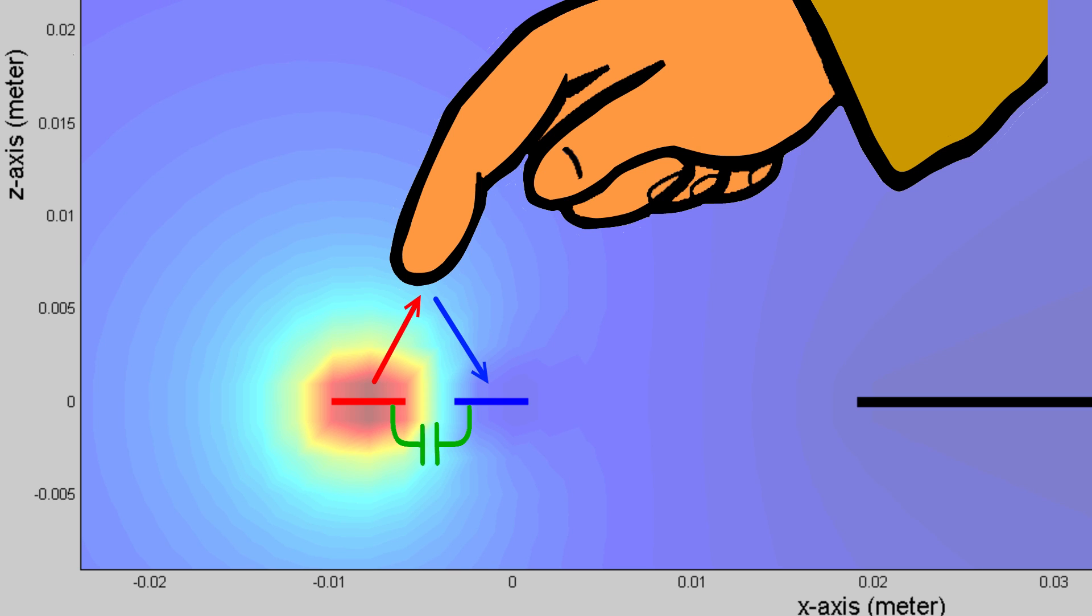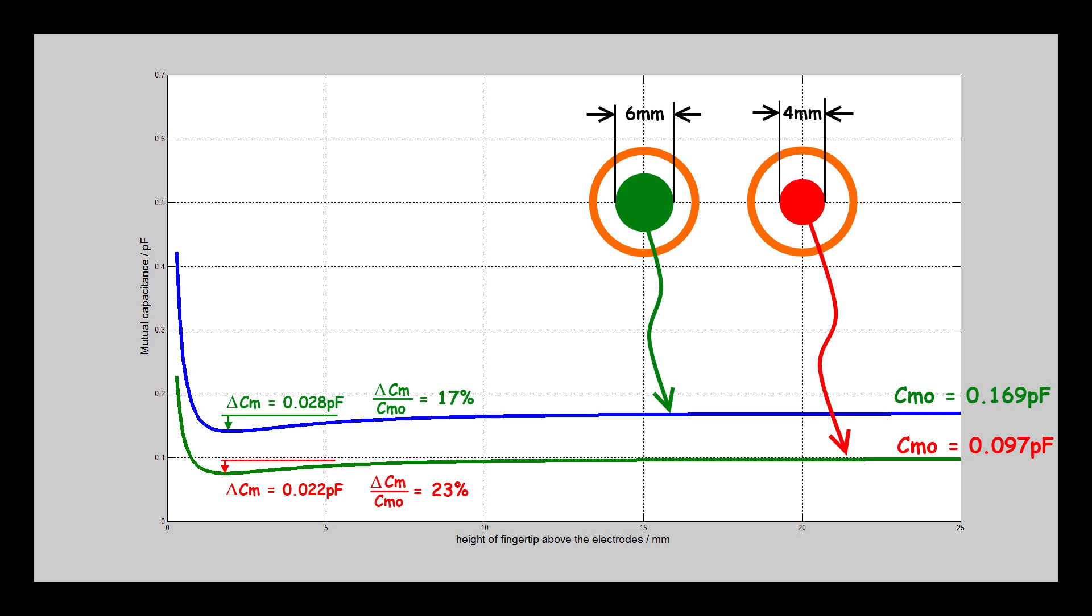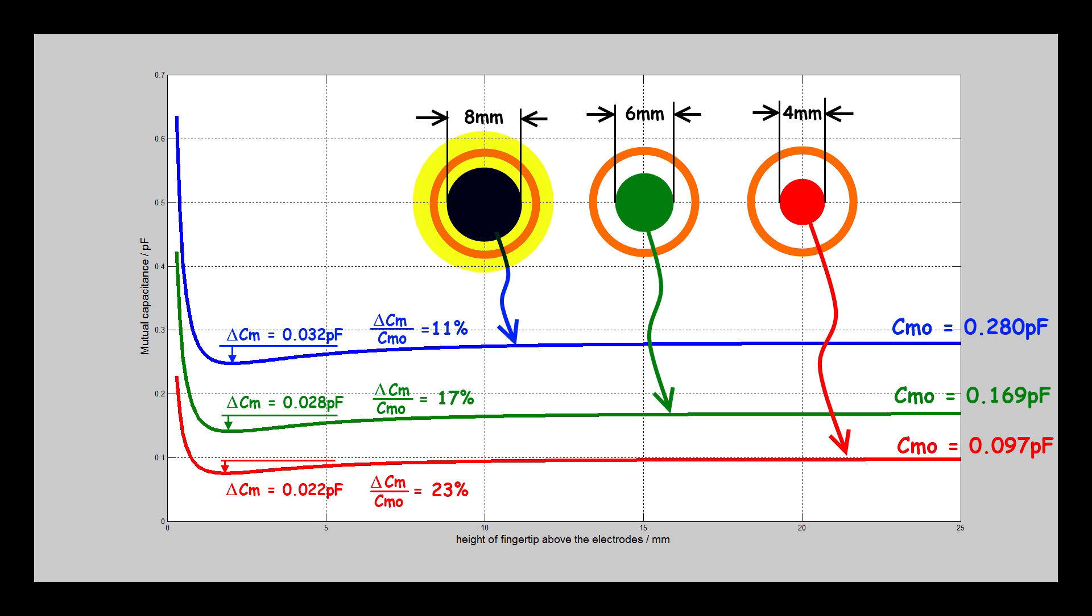If the receiver is placed nearer to the transmitter, the initial capacitance would increase. This simulation shows that when the coupling increases, the electrodes produce a stronger signal, a higher initial capacitance, and results in a lower percentage of change.